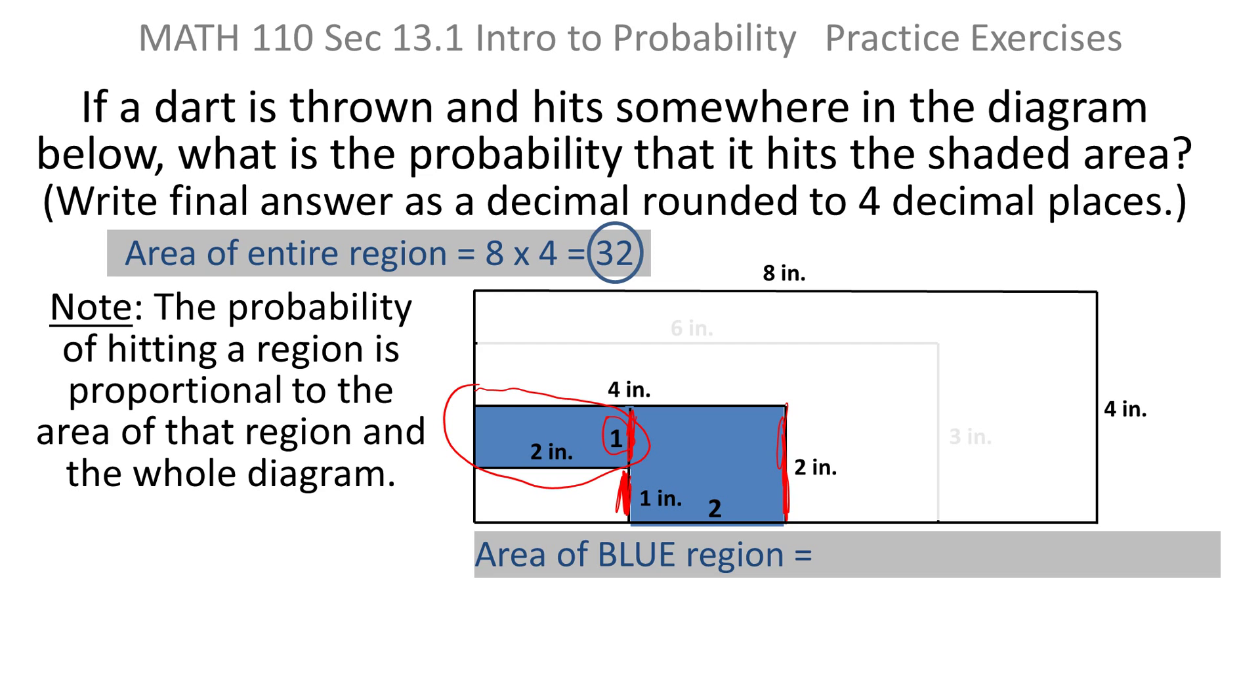And also the same thing with the lower measurement. If I know that it's two inches from here to here and it's four inches from here to here, then of course it must be two inches from here to here because two plus two gives me the four. So I've just added in the extra numbers that complete the picture that I need in order to calculate the areas.